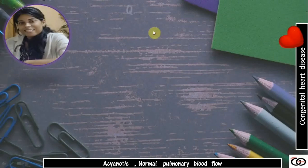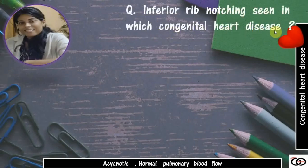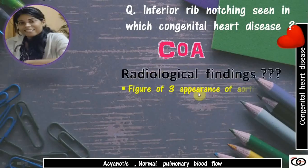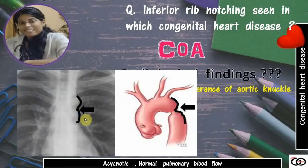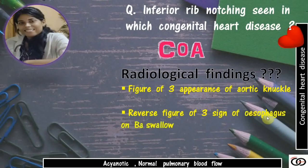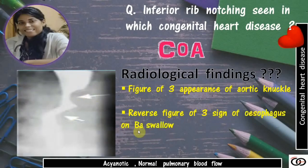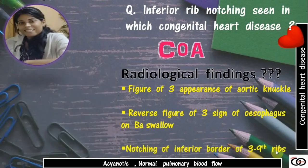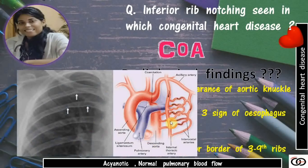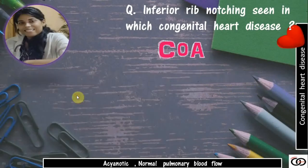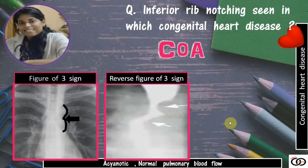Inferior rib notching is seen in coarctation of aorta. The radiological findings are: a figure-of-three appearance of the aortic knuckle, formed by the pre-stenotic dilatation of the arch of aorta and the left subclavian artery, then the constriction at the coarctation site, and then the post-stenotic dilatation of the descending aorta. We also find the inverse or reverse figure-of-three sign of the esophagus on barium swallow for similar reasons. And we find notching of the inferior border of the 3rd to 9th ribs on the posterolateral aspect, due to dilated posterior intercostal collaterals carrying increased blood flow because of the coarctation.